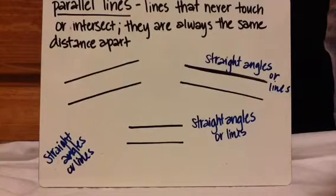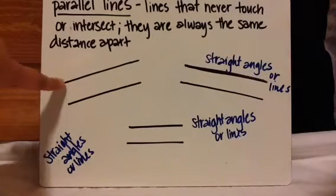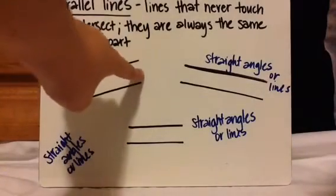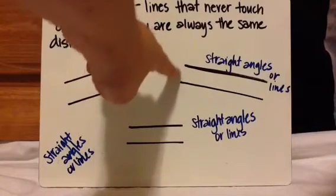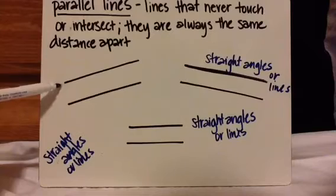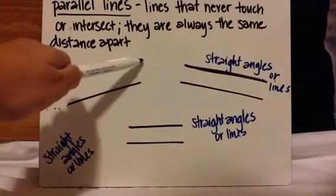The first one is parallel lines. Parallel lines are lines that never touch or intersect — they are always the same distance apart. I always associate parallel lines with straight lines: they're both straight and the exact same distance apart all the way.